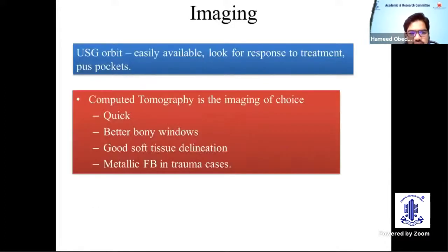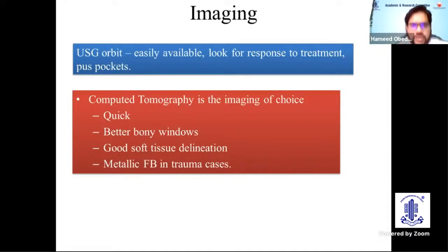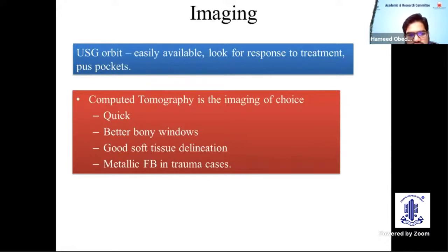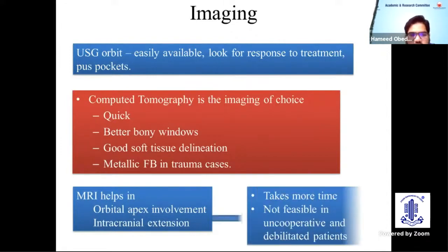Imaging: ultrasound is easily available — useful for looking for abscess pockets, assessing response to treatment, and in cases mimicking orbital cellulitis such as retinoblastoma with orbital extension where calcification within the globe can be identified. CT scan is the imaging of choice as it is quick and provides better bony windows, while MRI helps in identification of any intracranial or cavernous sinus involvement.